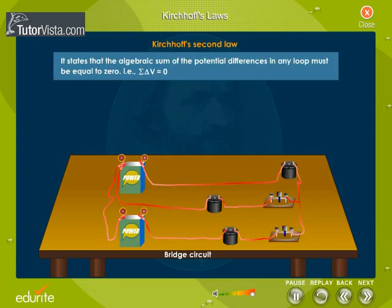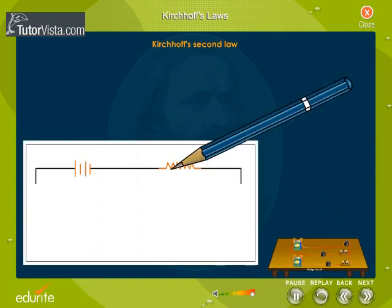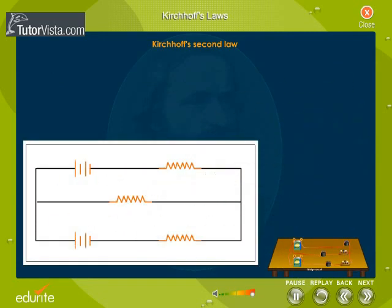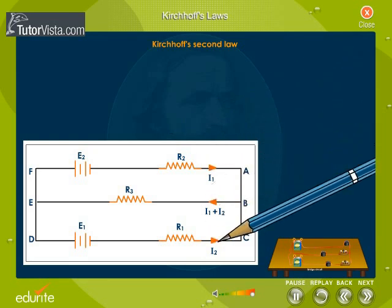Let us see how the loop rule is used to solve the given bridge circuit. First, draw a circuit diagram to represent the circuit. Mark the direction of flow of current through each branch of the circuit. Then apply the sign convention.